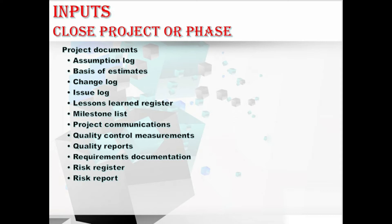The milestones list shows the final dates on which the project milestones have been accomplished. Coming to project communications, this input includes any and all the communications that have been created throughout the project. Coming to quality control measurements, they document the result of control quality activities and demonstrate the compliance with the quality requirements.